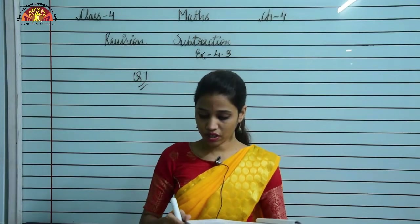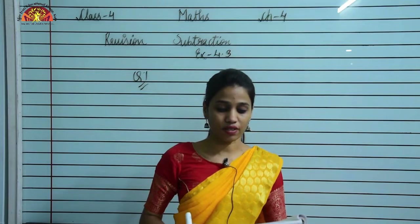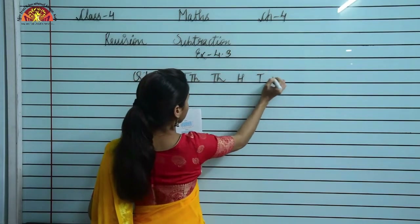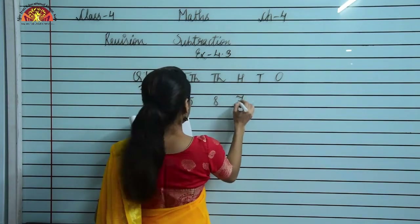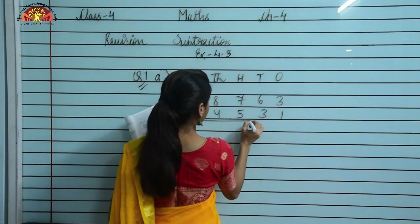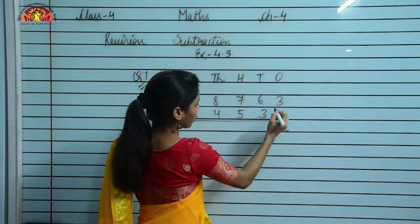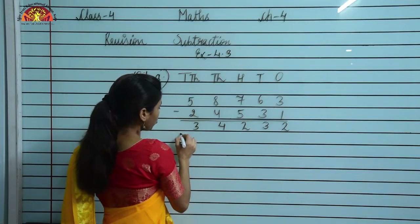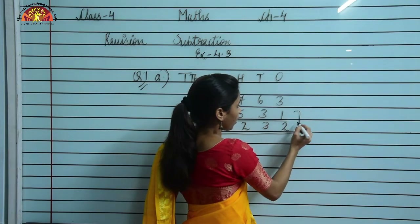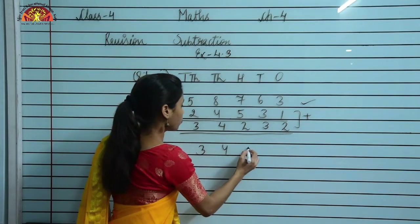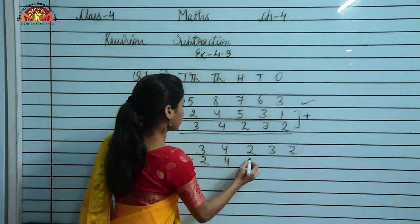Let us see exercise 4.3 on page number 45. Question number 1 is: subtract and check your answer. For part A, the columns are 10,000s, 1,000s, 100s, 10s, and 1s. The problem is 58,763 minus 24,531. 3 minus 1 is 2, 6 minus 3 is 3, 7 minus 5 is 2, 8 minus 4 is 4, and 5 minus 2 is 3. Now we check: we add 34,232 plus 24,531.